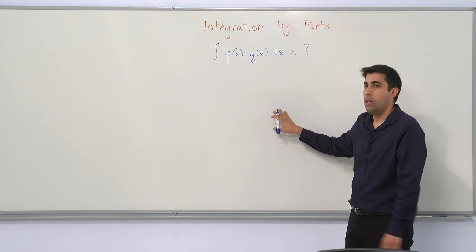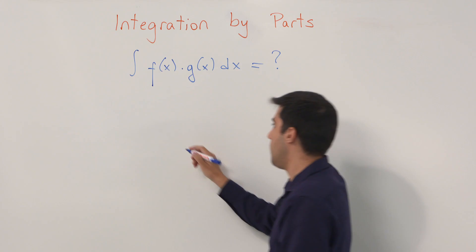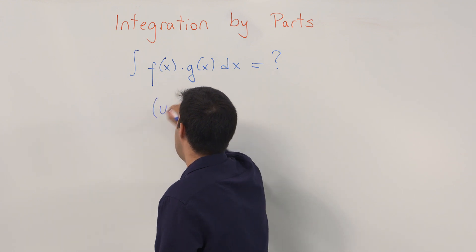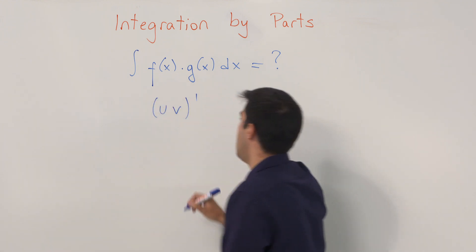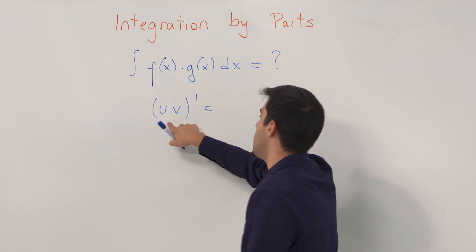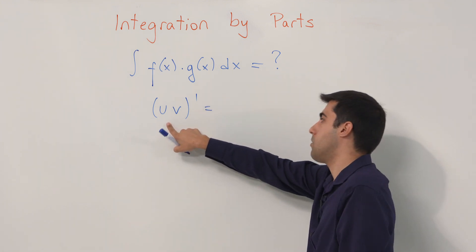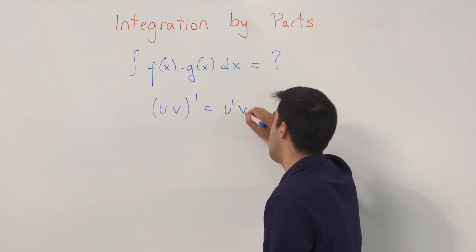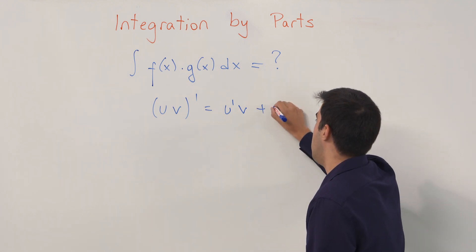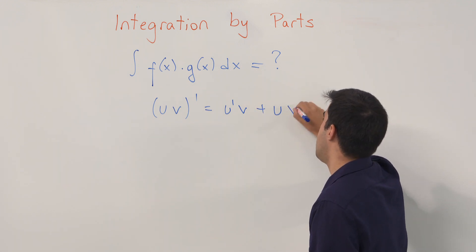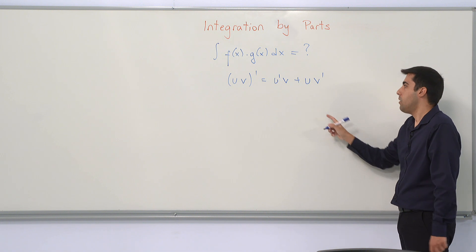The basic idea in this technique or method is to use the product rule for derivatives. We know how to take the derivative of a product. So if we have a product such as u times v, the derivative of a product using the product rule is the derivative of the first one, u prime, times the second one, v, plus the first one times the derivative of the second one.